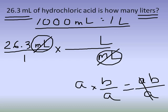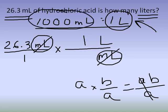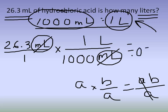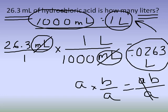Step three is to put the numbers in from our equality. One liter goes on top, and 1,000 milliliters goes on the bottom. To solve: multiply the numerators — 26.3 times 1 — and multiply the denominators — 1 times 1,000. So 26.3 divided by 1,000 gives 0.0263 liters. That is our answer: 26.3 milliliters is the same as 0.0263 liters.